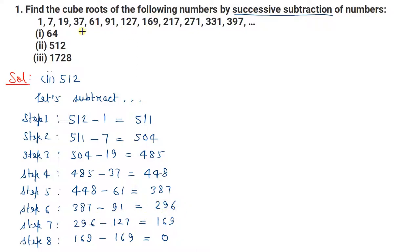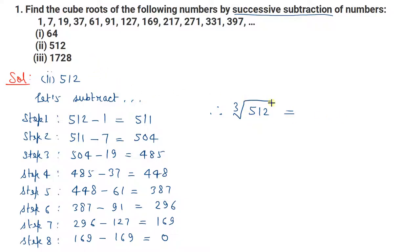Successively subtract करते जाएंगे और finally zero आ जाएगा। यहाँ पर 8 steps में zero आ रहा है। So the cube root of 512 — cube root यानी radical sign पर 3 लिखते हैं, जो power 1/3 को denote करता है — this is cube root, and its value will be 8. Answer is 8.